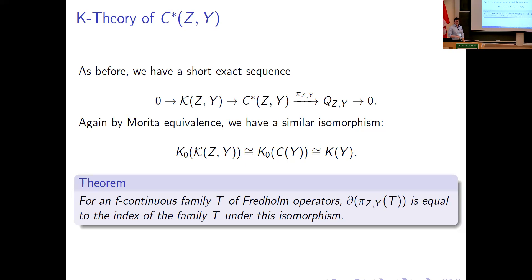I was hoping it would be easy to calculate the index of this family directly from the C*-algebra C*(Z_Y). However, in the single operator case you use polar decomposition to get a partial isometry that lifts easily to a unitary. Here it's not so simple, because if you try to form the partial isometry from an F-continuous family, it's not actually an F-continuous family. What that tells us is that you really do need to mimic the Atiyah-Singer construction of balancing out the kernels — in this case by injecting into a larger C*-algebra — in order for this to work.